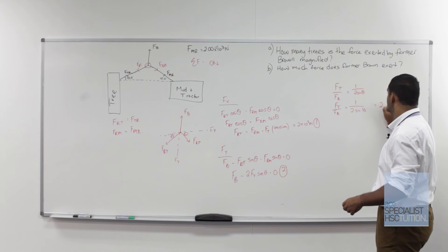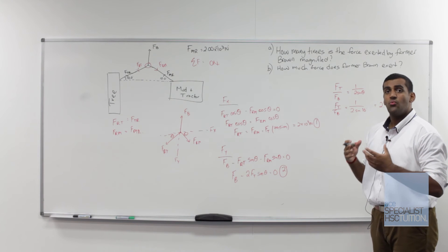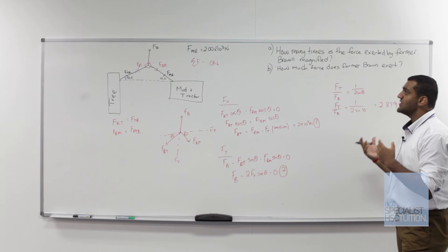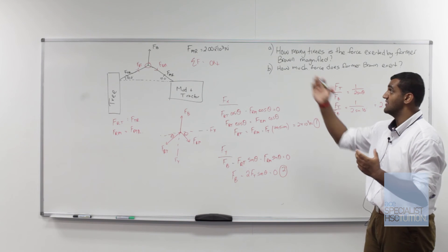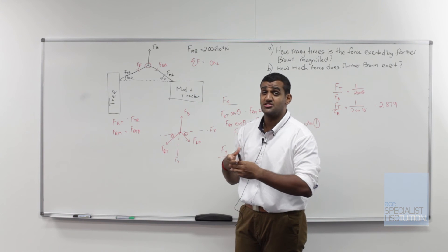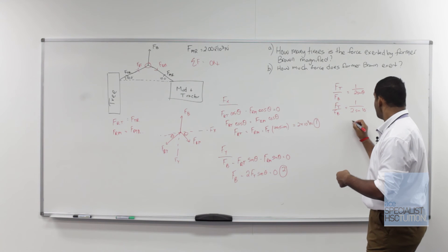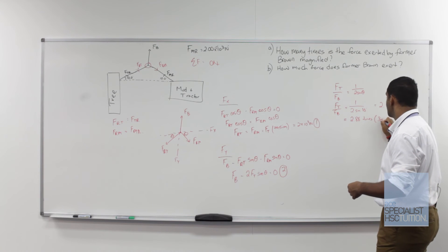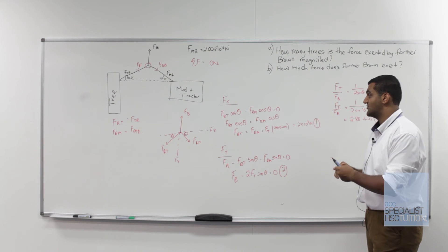So when we use this value now, we know that our forces are magnified by 2.879 times. Now to actually answer the question, we need to ensure that our final answer is given to the same number of significant figures as our initial values in the question. So here we are given 10.0 degrees and 10.0 degrees, both of which are to three significant figures, and 2.00 times 10 to the 3, again to three significant figures. So that means that our answer should be 2.88 times to three significant figures. It's always good practice to write down in brackets something like 3SF to signify that you have taken your answer to three significant figures.